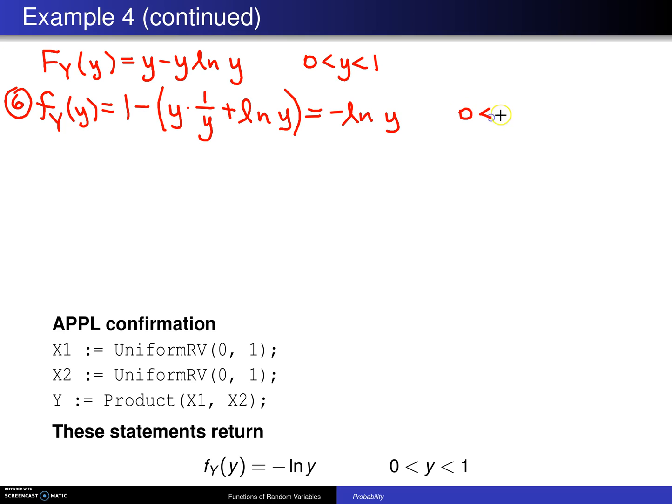Now that negative might make you a little bit nervous, but it shouldn't for the following reason. Whenever you plug in a y value between 0 and 1 into the natural log, you will always get a negative number, so this negative will cancel with that. So the probability density function, as always, will be greater than or equal to 0.